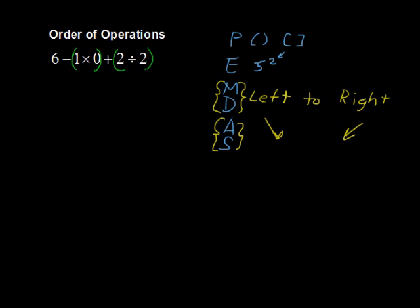So let's simplify those, and what we're left with is 6 minus 1 times 0 is 0, plus 2 divided by 2 is 1.